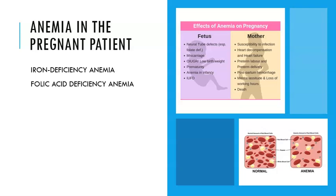One symptom associated with anemia in pregnancy is pica — eating non-nutritive items. This can include things like ice, cornstarch, clay, or laundry soap. These patients will eat these substances compulsively, in large amounts. The anemia is what causes these cravings, and pica is what is associated with it in pregnancy.